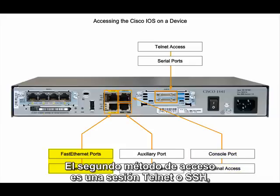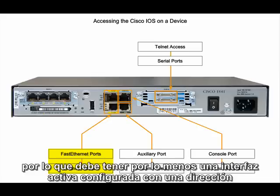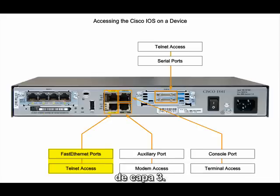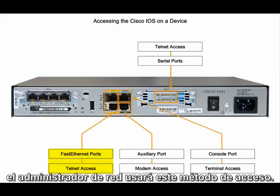The second access method is through a Telnet or SSH session. This requires active networking services on the device, so it must have at least one active interface configured with a Layer 3 address. Once a router or switch has been configured and is installed in a network, the network engineer will use this method for access.